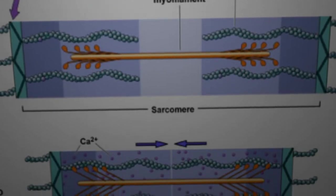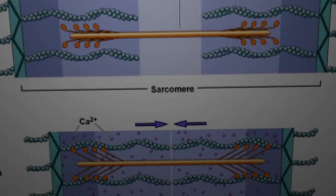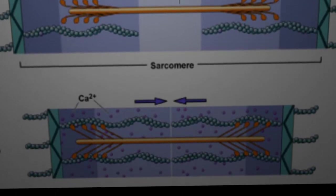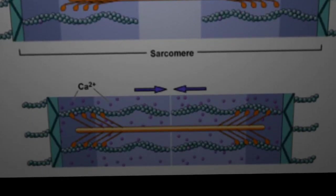The thick filament is attached to the M-line, while the thin filament is attached to the Z-disc. The thick filament is composed of the protein myosin, while the thin filament is composed of the proteins actin and troponin.